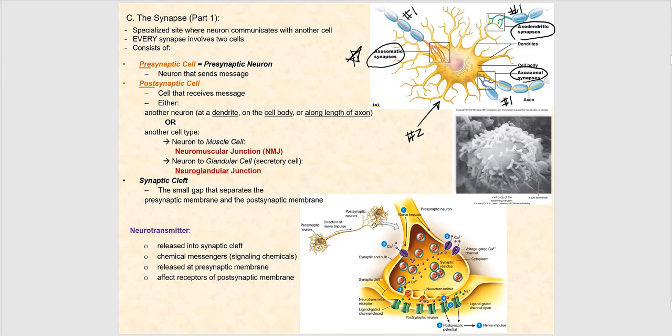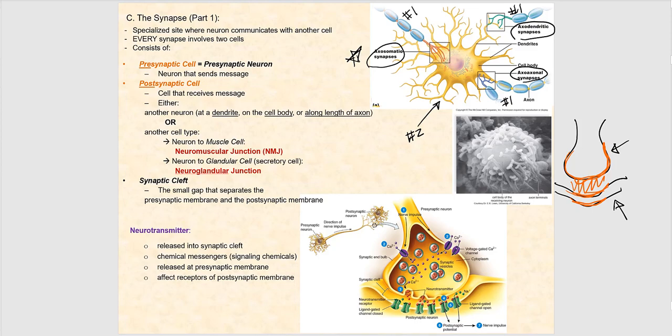There is a small gap that separates the presynaptic membrane and the postsynaptic membrane — that gap is called the synaptic cleft. The presynaptic membrane is the plasma membrane of the presynaptic cell, which is a neuron, and it synapses with the plasma membrane of the postsynaptic cell — which could be the plasma membrane of a muscle, a glandular cell, an axon, a dendrite, or the soma of the postsynaptic neuron.